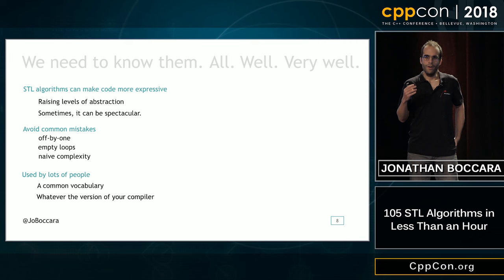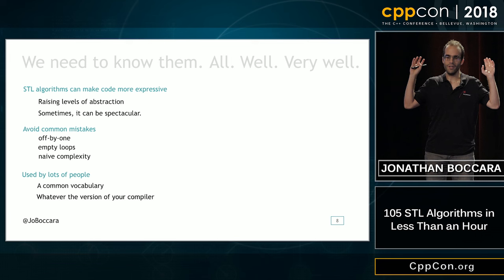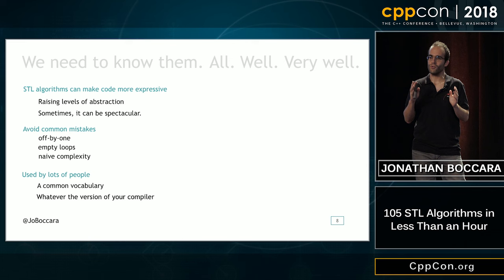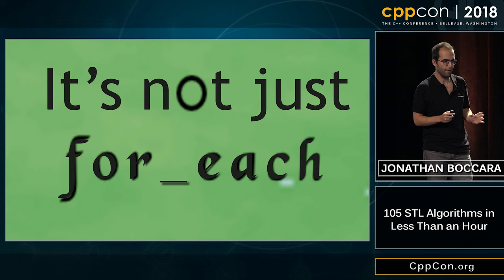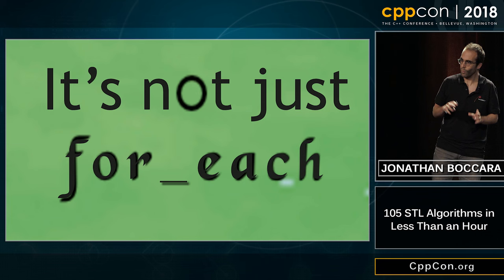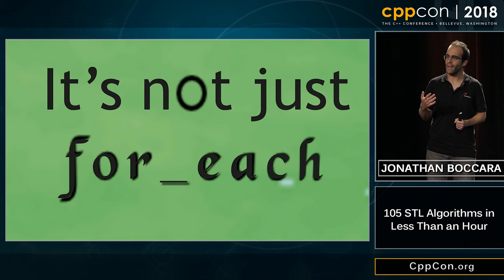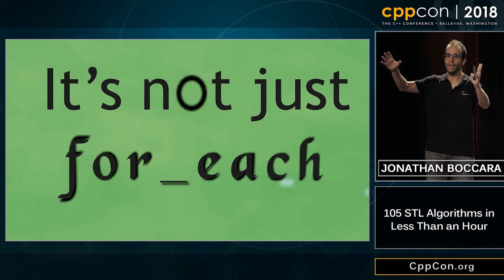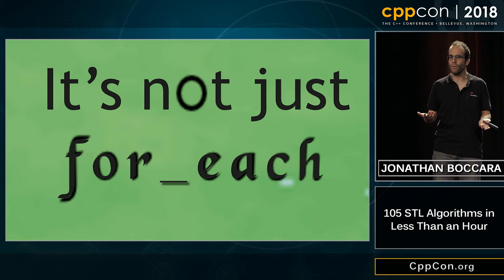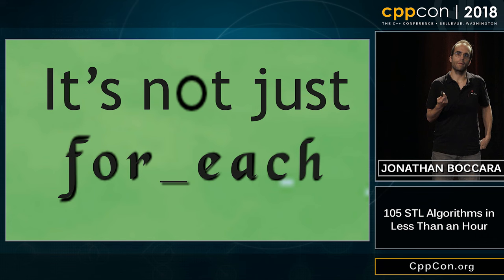Now, there's a trap lying just at the beginning of the path to STL algorithms, and it's called for_each. for_each is one of the STL algorithms — there's nothing wrong with it, it has a use case we'll see later. But the trap it represents is that it looks like a for loop: it takes a begin and an end and some code to execute on every element of the collection, just like a for loop. So you might be tempted to replace all your for loops with for_each and think you'd be done using STL algorithms. But that's not quite the spirit, because there's much more than for_each in the STL algorithms library.